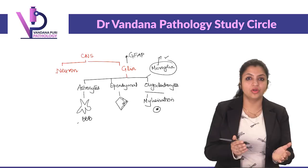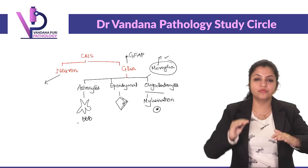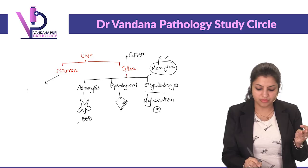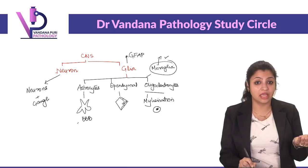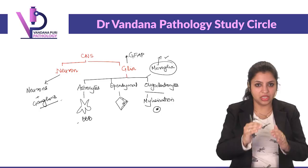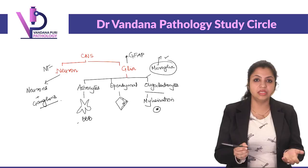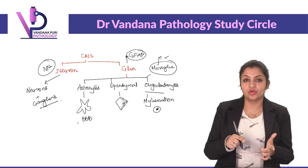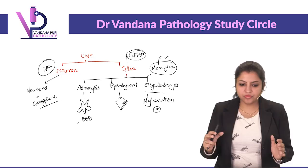Neurons are the cells transmitting information from one end to the other. Neuronal tissue is made up of neurons and ganglion cells, and their major function is transmission of information. The intermediate filament of neuronal tissue is called neurofilament, whereas the intermediate filament of glial tissue is GFAP.